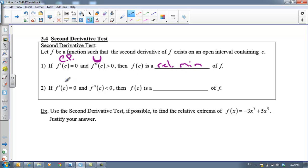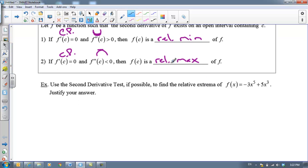The second statement says that if you are at a critical point and you are concave down at that critical point, then you are at a relative max. Let's take a look at an example. I've got a function here and I'm supposed to use the second derivative test if possible to find the relative extreme.